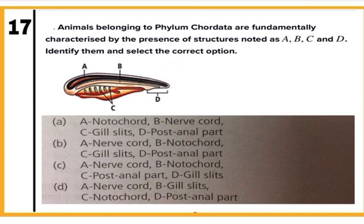Question 17: Animals belonging to phylum Chordata are fundamentally characterized by certain structures. The given figure shows characteristics of Chordata where A is nerve cord, B is notochord, C is gill slits, and D is the post-anal part. Correct answer is B. Mark B.